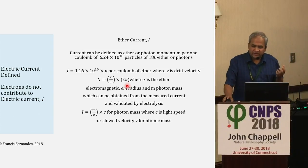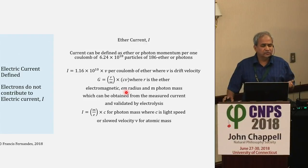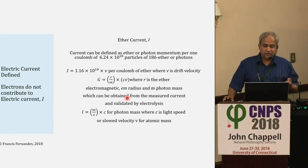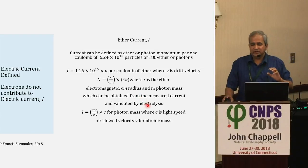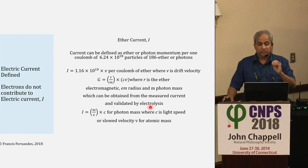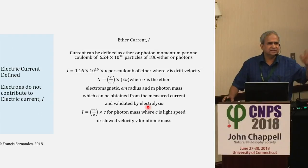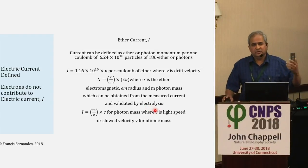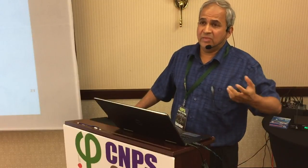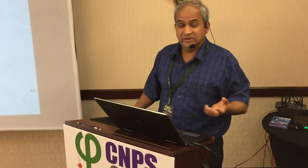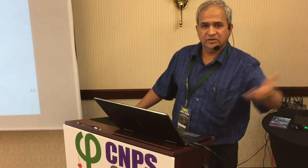You can't just say velocity in the gamma factor is just velocity. Velocity is distance upon time — to what matter or mass is that velocity attributed? It's two masses: one is ether, one is matter.